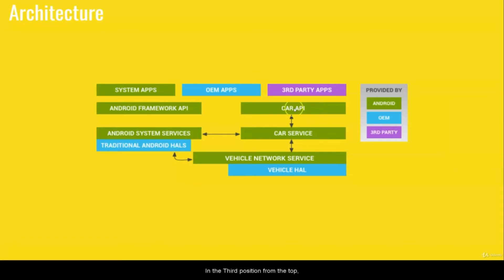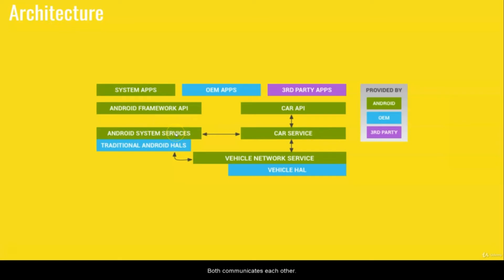In the third spot from the top, there is the Car Service and the Android System Service. Car Service belongs to Android Automotive, and Android System Service is from native Android. Both communicate with each other. In fact, Car Service is actually started by the System Server.